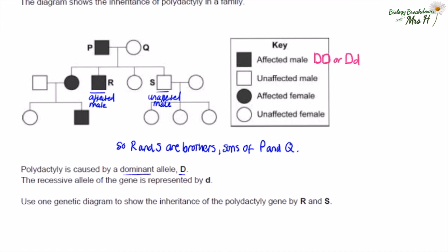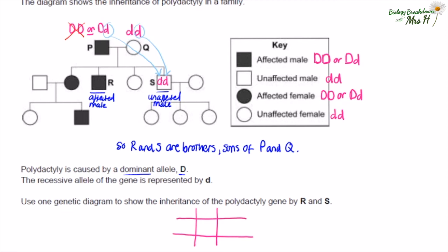We can annotate the key: an affected male could have genotype DD or Dd, as polydactyly is caused by a dominant allele — you only need one dominant allele to have the condition. An unaffected person will be dd. Looking at the parents: Q is definitely dd because she is unaffected. P is affected so could be DD or Dd. However, since child S is dd, S must have got one recessive allele from Q and one from P — so P can only be Dd.